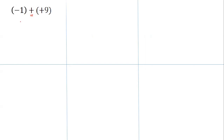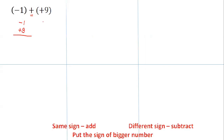First one: minus 1 added to plus 9. In between minus 1 and plus 9, there is a positive sign, meaning we have to add them. Write one below the other and look at their signs — the signs are different. If two integers have different signs, you have to subtract the smaller from the bigger: 9 minus 1 is 8. Then put the sign of the bigger number, which is plus. So the answer is plus 8.